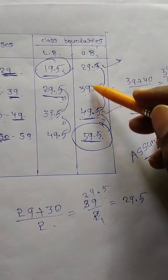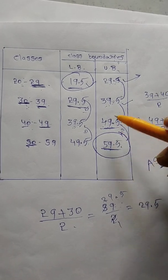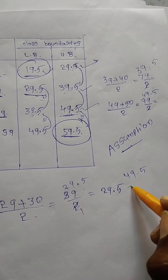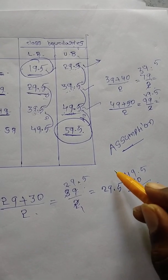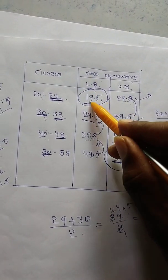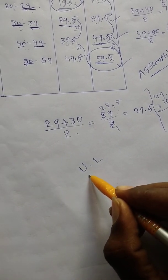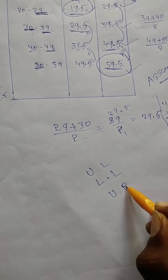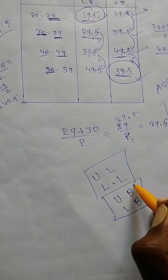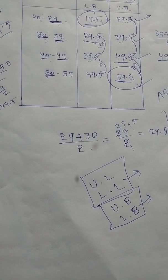Similarly, for the next class: upper boundary = (39 + 40) / 2 = 79 / 2 = 39.5. Then (49 + 50) / 2 = 99 / 2 = 49.5. The upper boundary of the last class is found by adding the class size (10) to the previous boundary: 49.5 + 10 = 59.5. If you know the basics — upper limit, lower limit, upper boundary, lower boundary — you can do the problems easily. We will discuss exercise problems in the next video. Thank you.